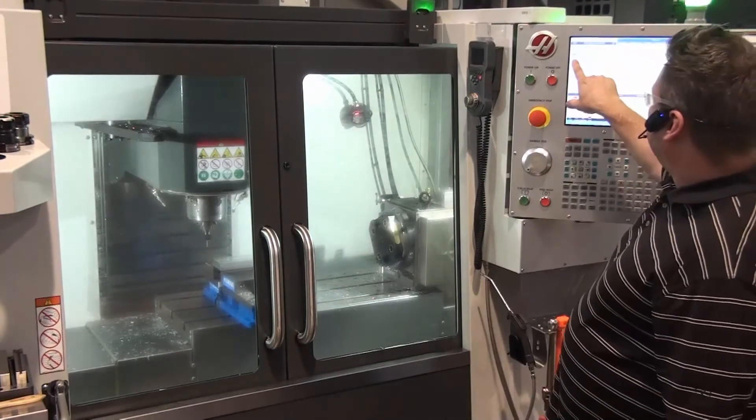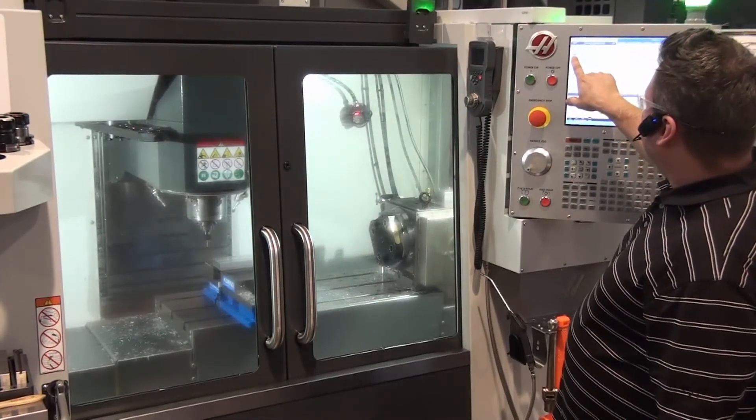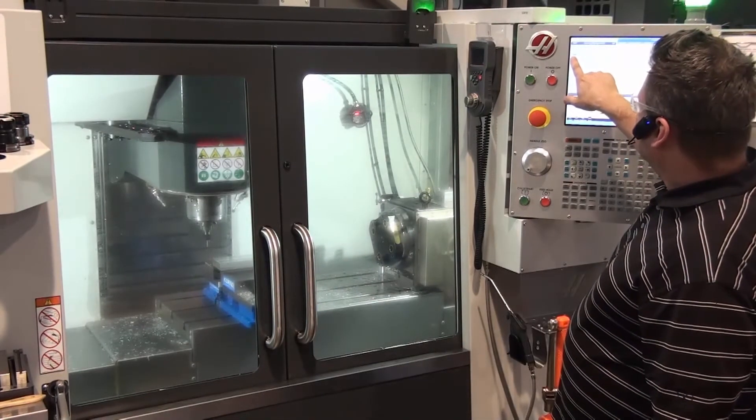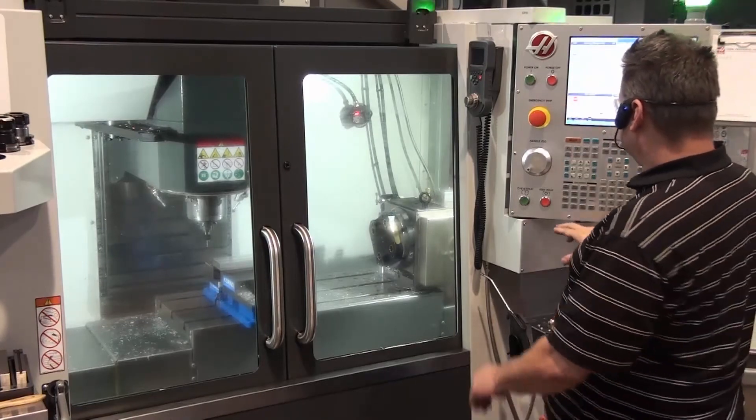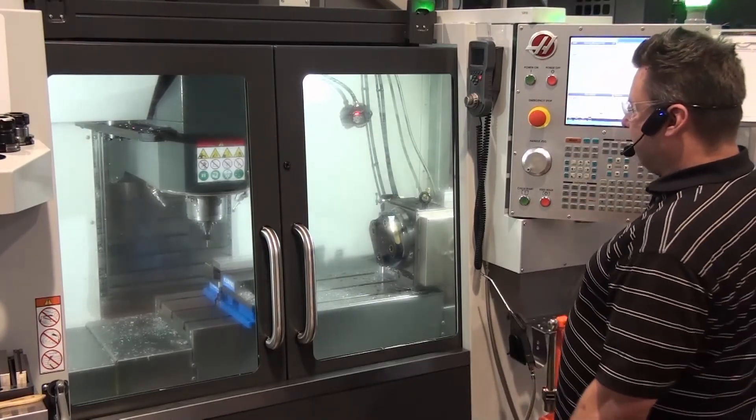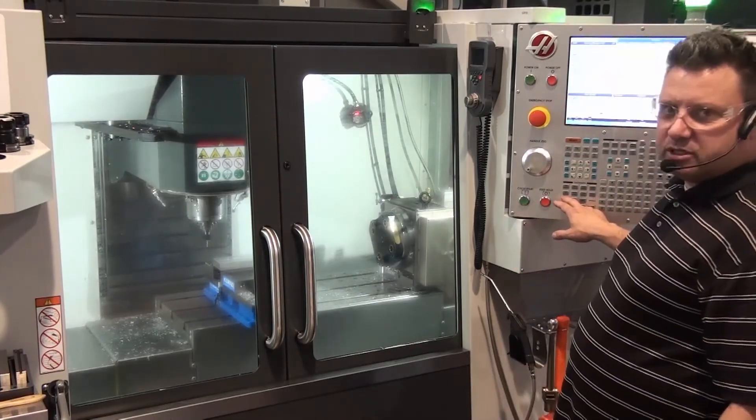I look at my next line of code, I should go down about 25 thousandths above the top of the part. So again, I turn the spindle on. Always turn the spindle on.